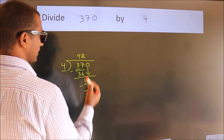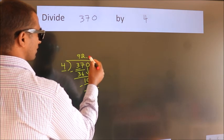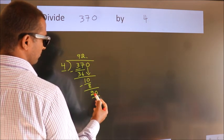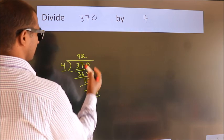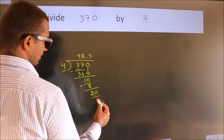So what we do is, we put dot, take 0. So 20. When do we get 20 in the 4 table? 4 times 5 equals 20.